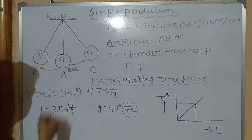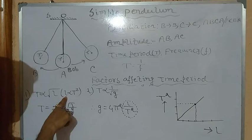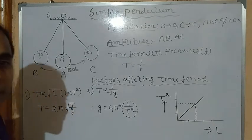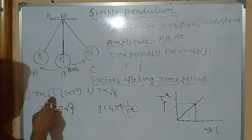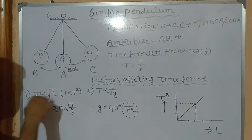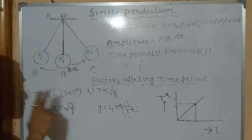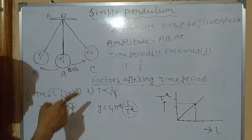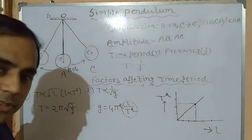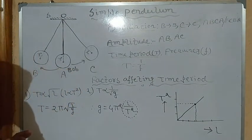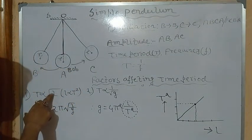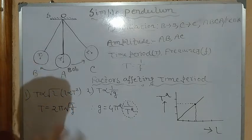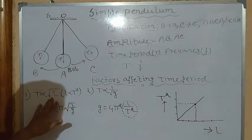For example, if we take four times the length, the time period becomes double. If we take nine times the length, the time period becomes three times. This is because of the square root relationship — √4 = 2 and √9 = 3. So time period is directly proportional to the square root of the effective length.